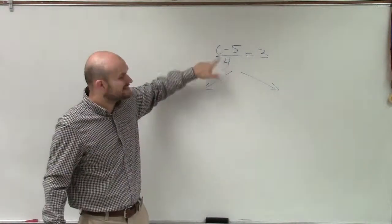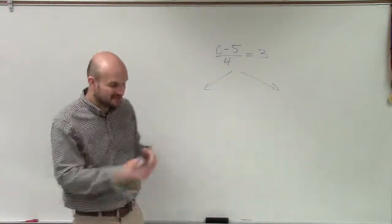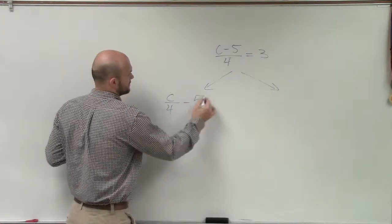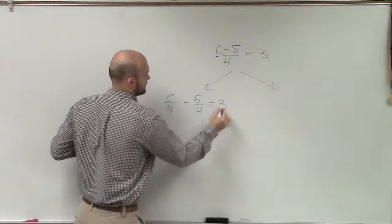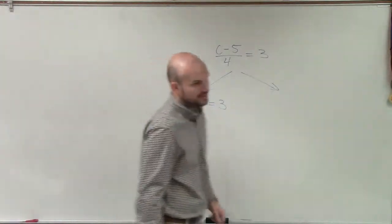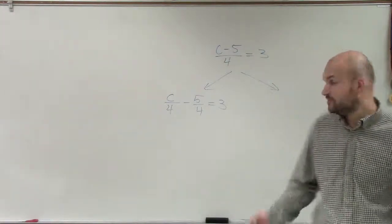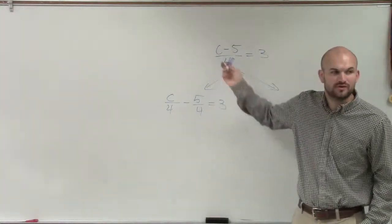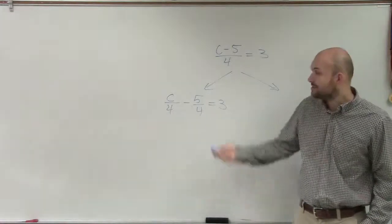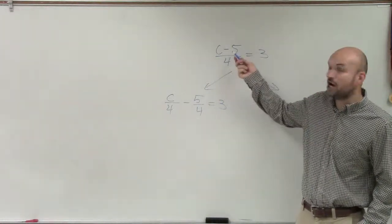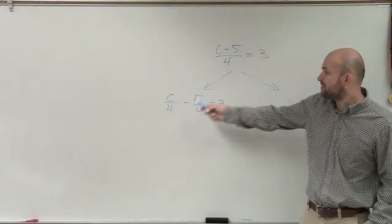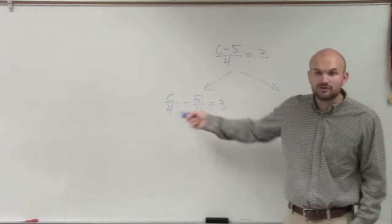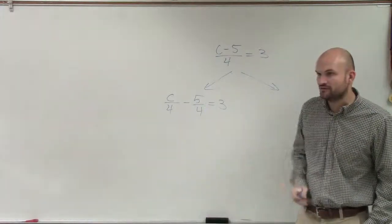This 4 divides into the C and into the negative 5. So really, this problem looks like this. That's really what this problem is — you're dividing the 4 into both of your terms. So if you want to solve this, you need to undo subtracting 5, but that 5 is being divided by the 4. So if you're actually going to solve this problem, you're going to be dealing with fractions.